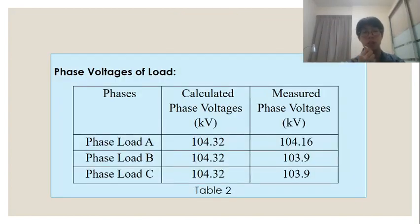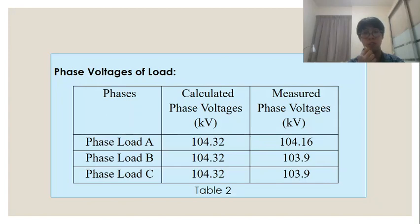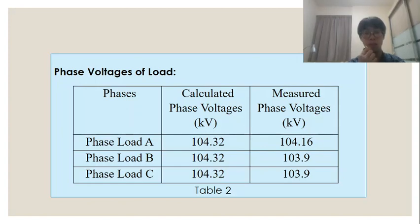Table 2 shows the phase voltages of the load. The calculated phase voltages for phase load A, phase load B, and phase load C are the same, at 104.32 kV. There is a slight difference between the calculated and measured phase voltages. The measured value for phase load A is 104.16 kV, and the measured values for phase load B and C are both 103.9 kV.